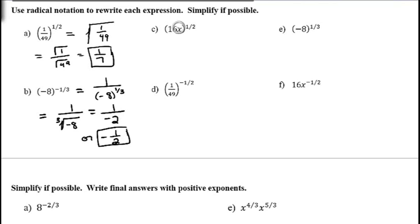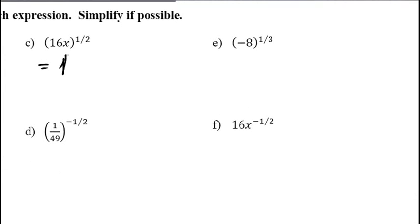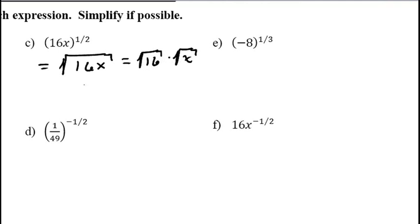For (16x) raised to the 1/2: that's the square root of 16x. We can take the square root of 16 but not of x, so write it as the product of two square roots — the square root of 16 times the square root of x. The square root of 16 is 4, so the result is 4 times the square root of x.